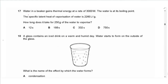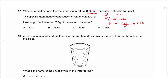Question 17: water in a beaker gains thermal energy at 3000 W and is at its boiling point. The specific latent heat of vaporization of water is 2260 J/g. Using Q = mL, and power × time = mass × latent heat: time = (250 × 2260) / 3000, giving approximately 188 seconds, so the answer is B.